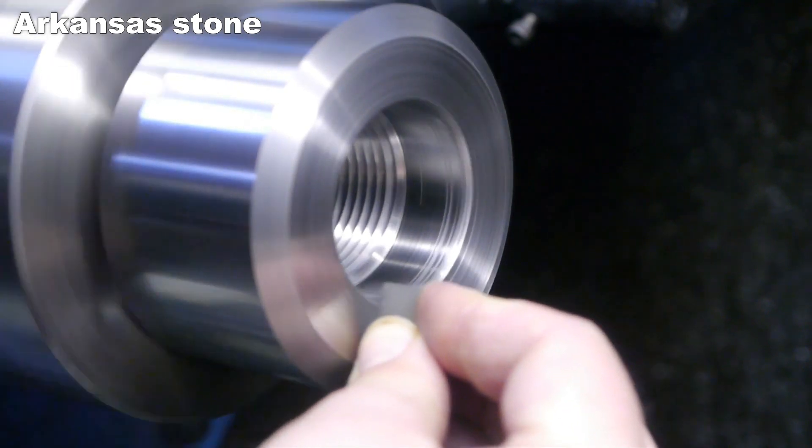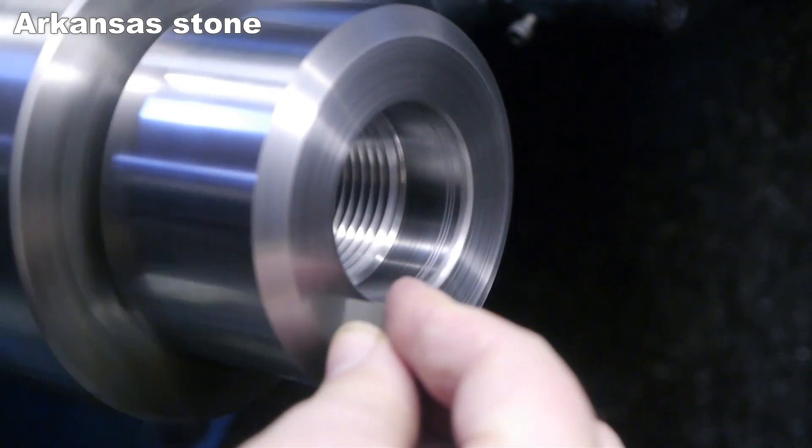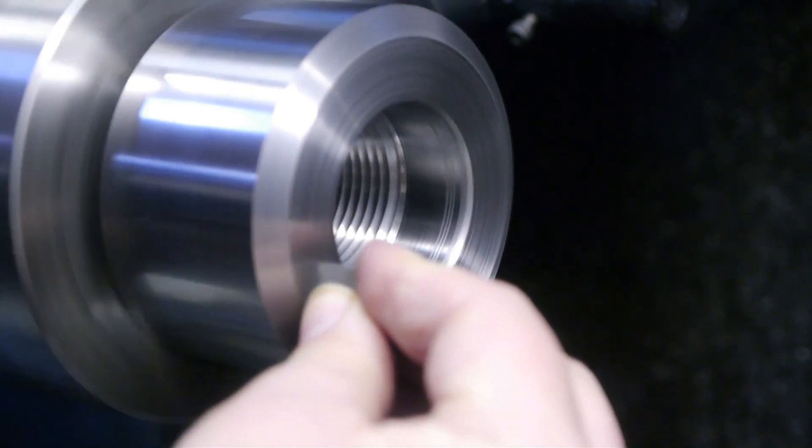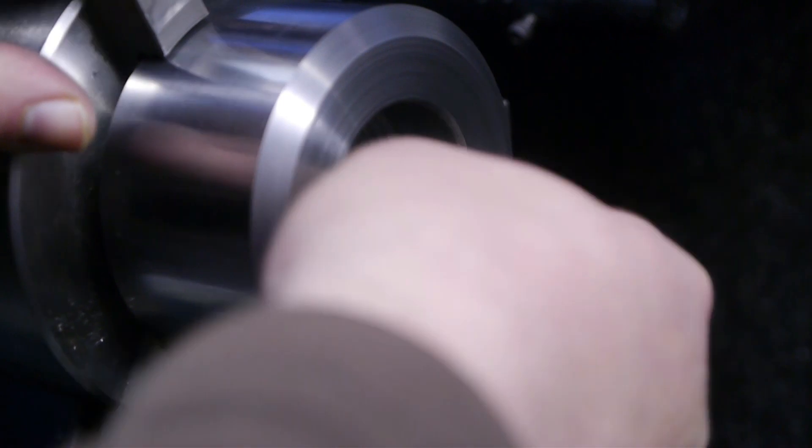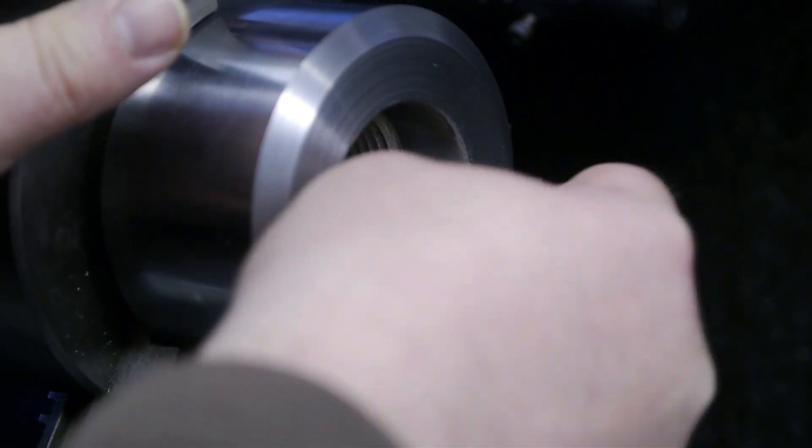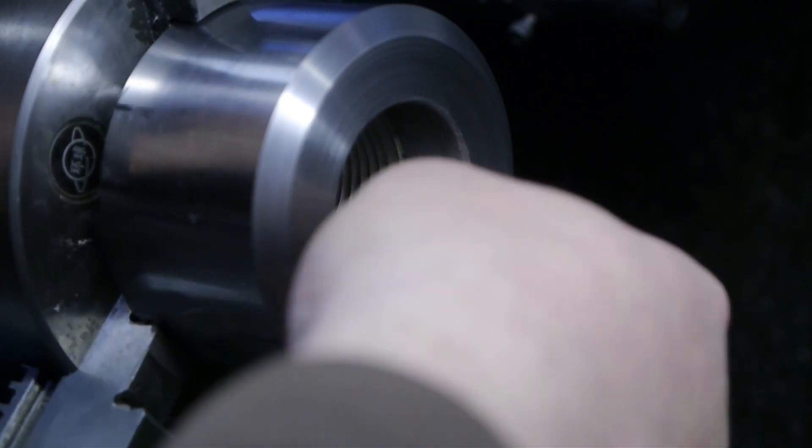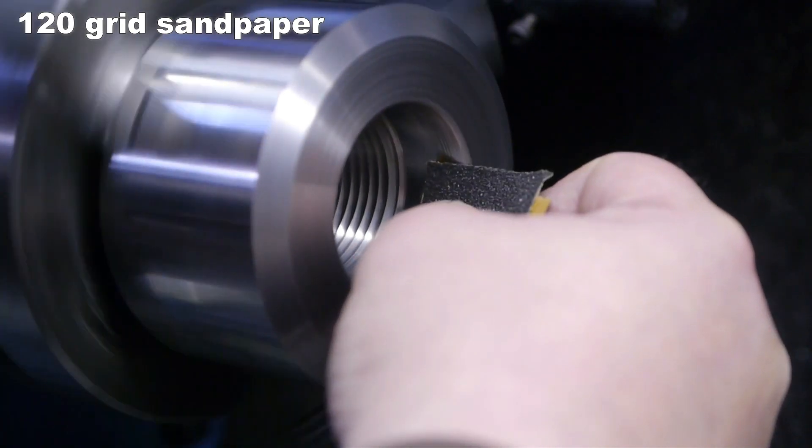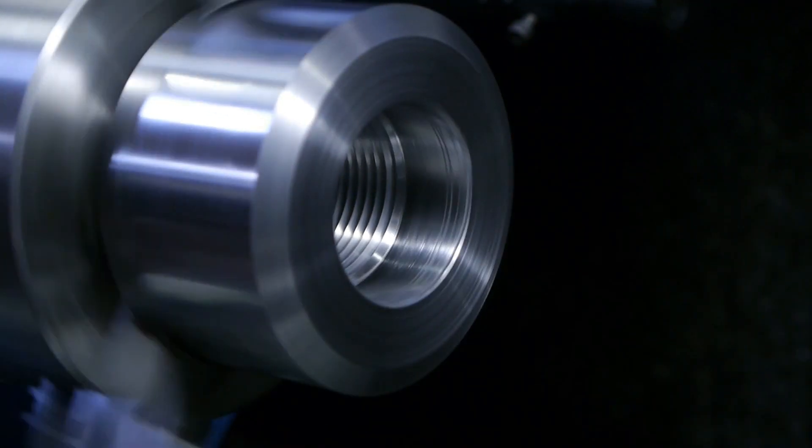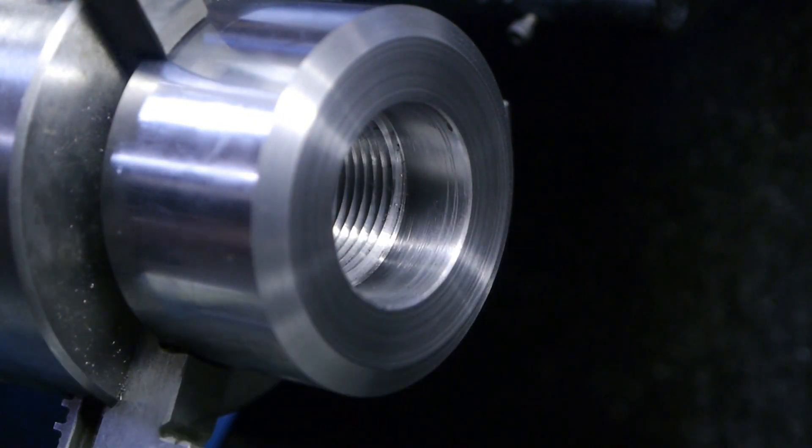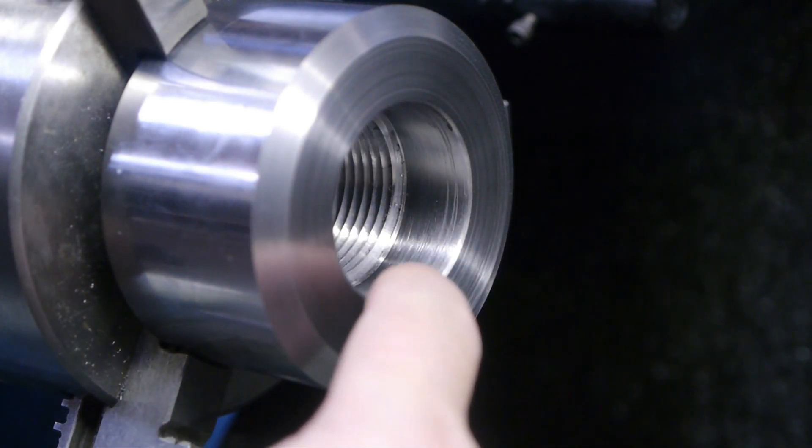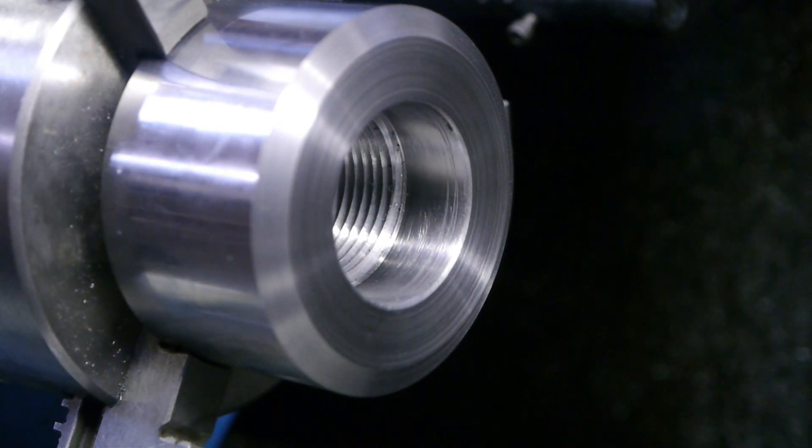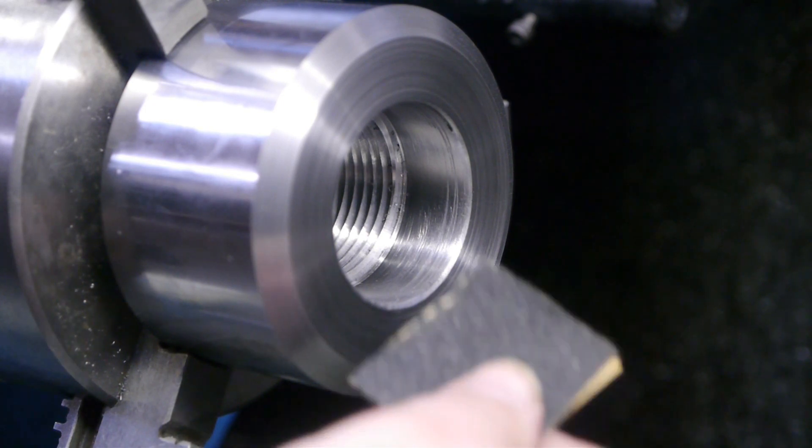Not bad. This is 120 grit. All right, I'll keep doing that for a while. Remember there was a bit of a taper on the spindle register, and it went from 45.99 in the back here to about 46 millimeter in the front here, so I guess I have to form that taper using a bit of sandpaper.